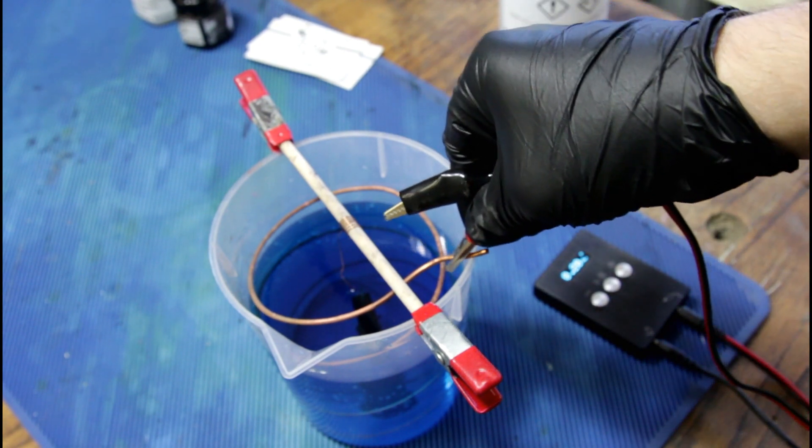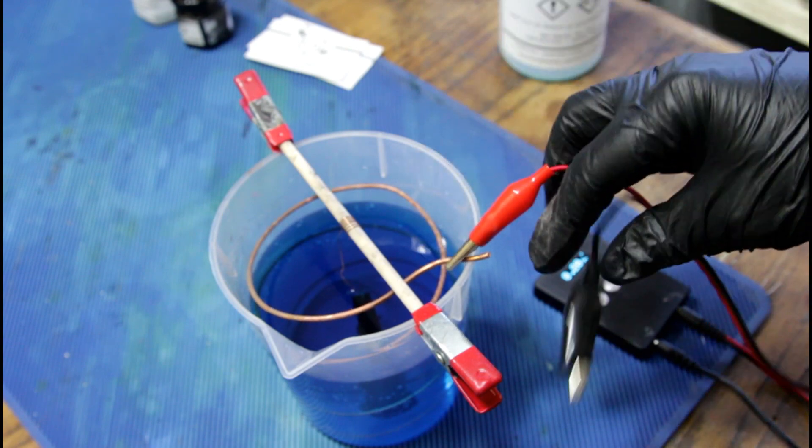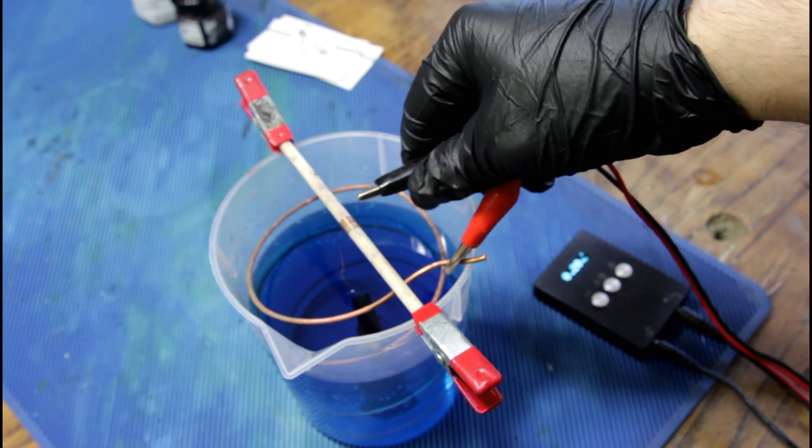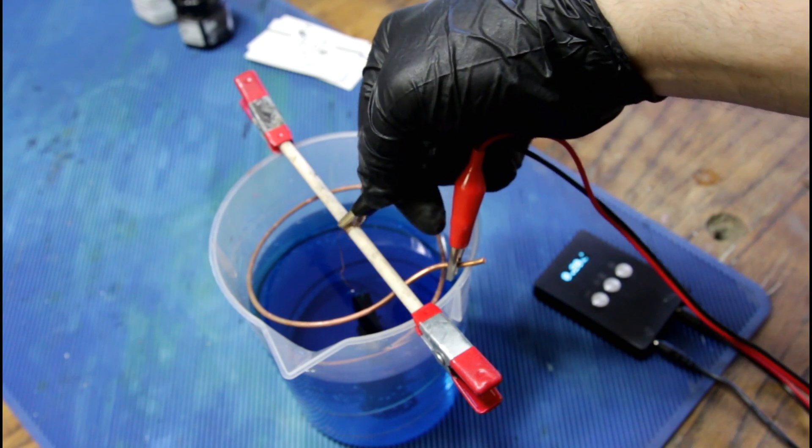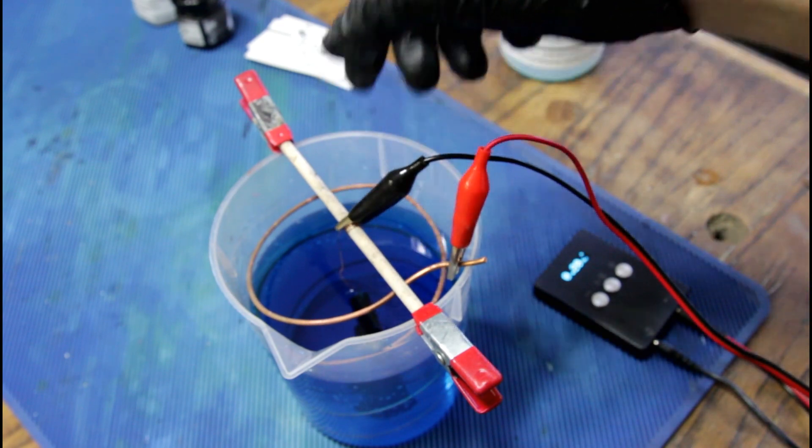So the red goes to our copper coil and the black goes to the object that we are electroforming, and press start.